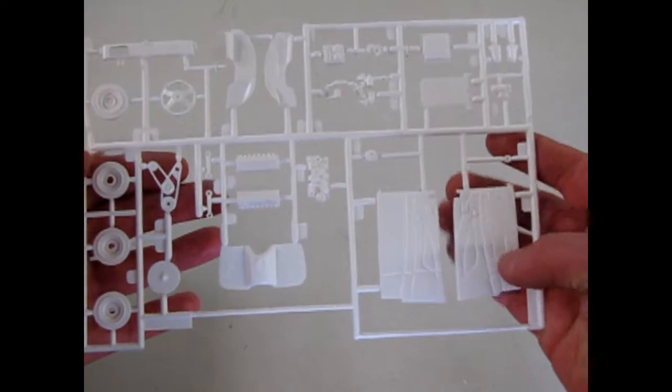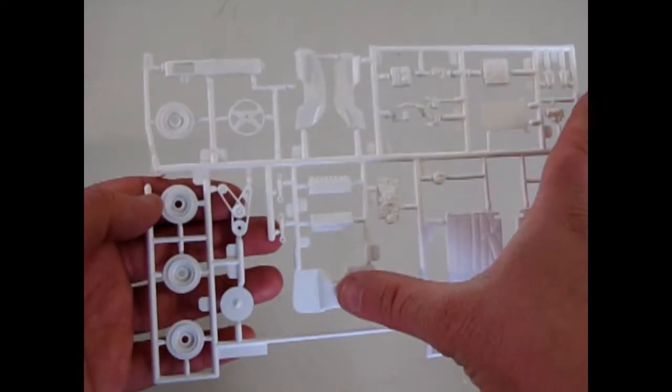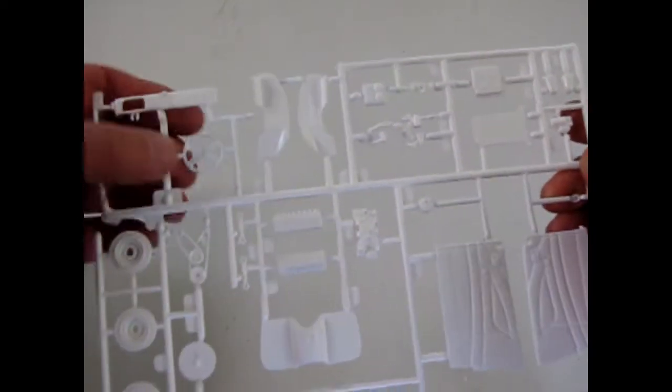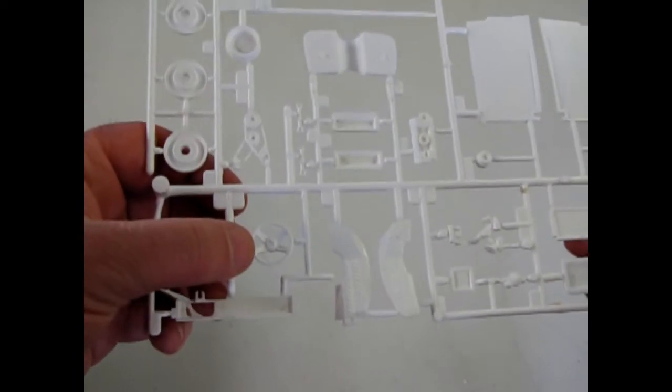This parts tree here has the door panels and the nice Camaro style steering wheel.